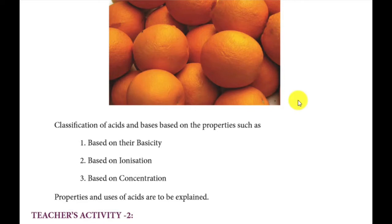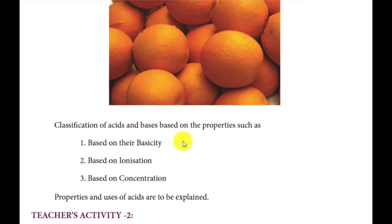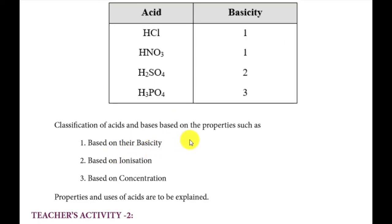Coming to the classification of acids and bases based on properties. First, acid classification. First, based on basicity. Basicity is the number of replaceable hydrogen atoms. If the acid contains only one replaceable hydrogen atom, we call it a monobasic acid. Example: hydrochloric acid, HCl.